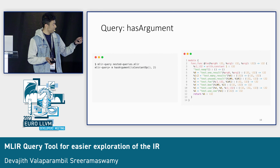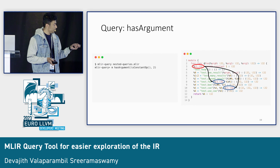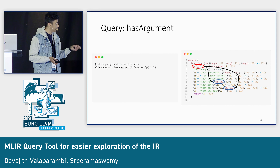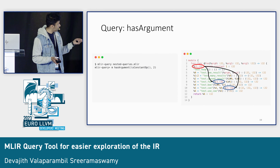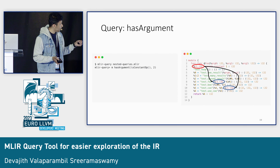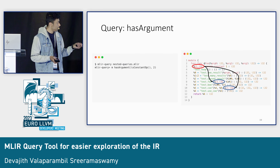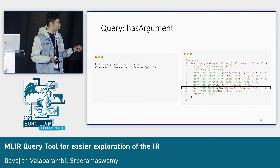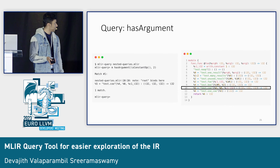From the previous slides we know isConstantOp should match that value, and it's used at two places: on line 8 and on line 11. Where is it used at index 2? It should be at that specific operation — and that is a match. It matches at line 10.